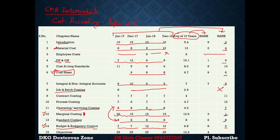This is the benefit of prioritizing your study — covering the top-ranked chapters first gives you the best return. That was all about prioritizing the content of your cost accounting paper for CMA Intermediate. I hope you found this video helpful. If you liked it, please like, share, and subscribe to the channel. Thank you so much, have a nice day!